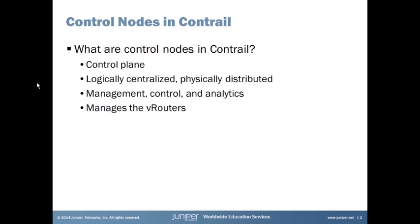Think about BGP route reflectors in a service provider network — very similar. BGP route reflectors reflect BGP routes to different BGP peers; they're logically centralized but don't have to be physically in the same building. Same thing with control nodes: logically centralized, you could have multiple control nodes working together but physically distributed. A control node handles the management, control, and analytic functions.